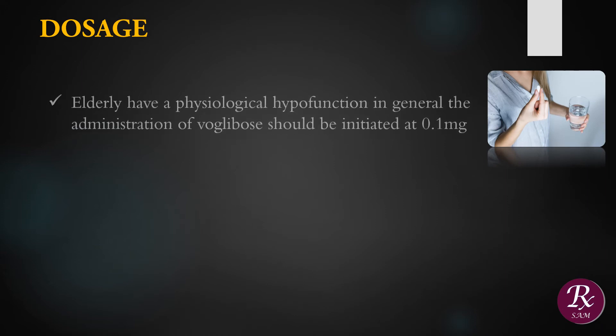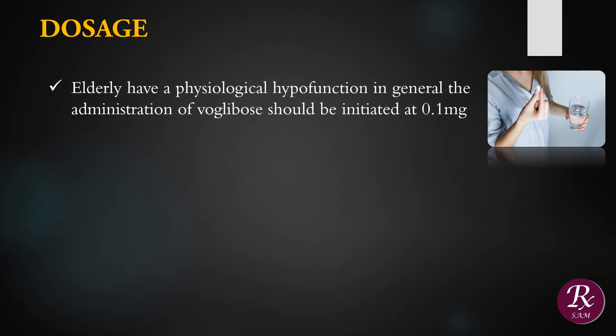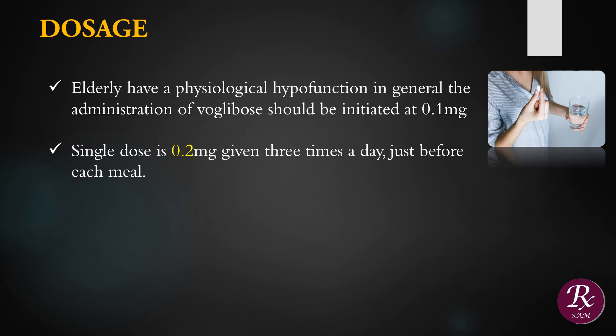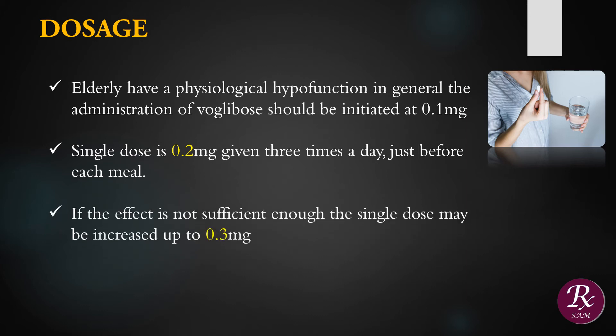Doses of Voglibose: Elderly have a physiological hypofunction. In general, the administration of Voglibose should be initiated at 0.1 mg. The single dose is 0.2 mg given 3 times a day just before each meal. If the effect is not sufficient enough, the single dose may be increased up to 0.3 mg.